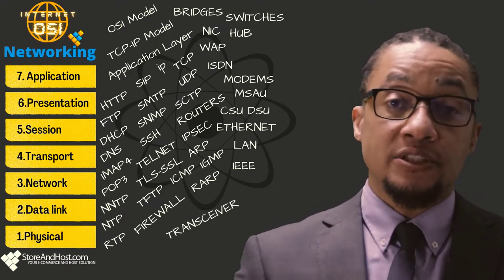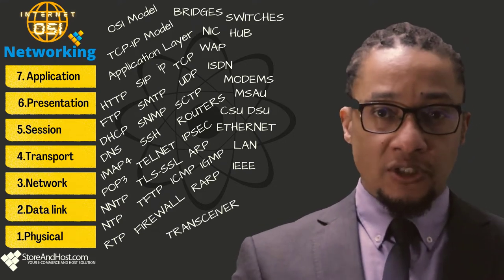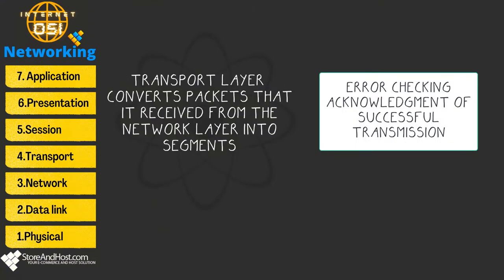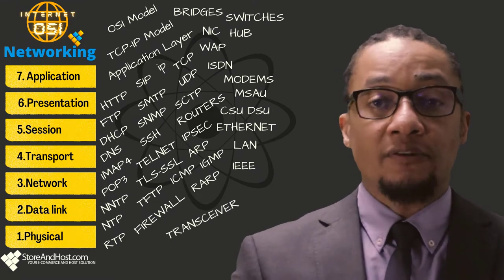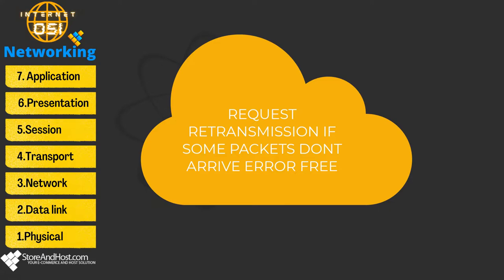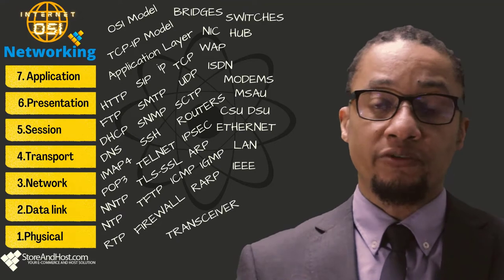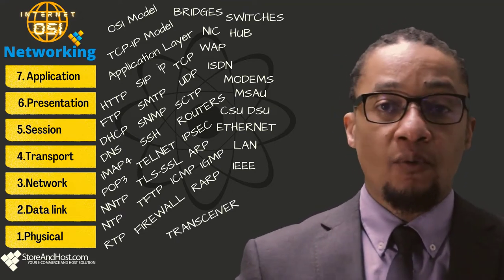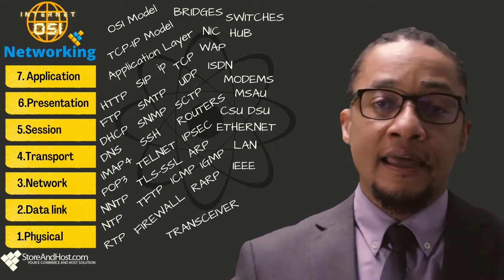The transport layer converts packets received from the network layer into segments and assures those segments are ready for transmission. It provides error checking to guarantee error-free data delivery with no losses or duplication of segments. It also provides acknowledgement of successful transmissions and requests retransmission if some packets don't arrive error-free. The transport layer includes features like flow control and error handling of data, and devices like firewalls reside over this layer.